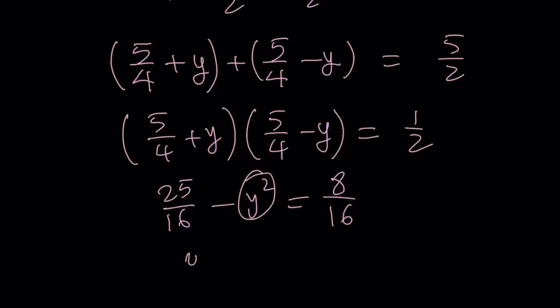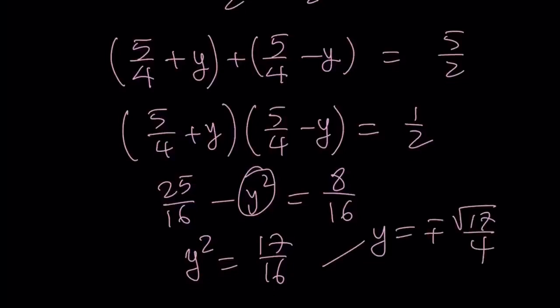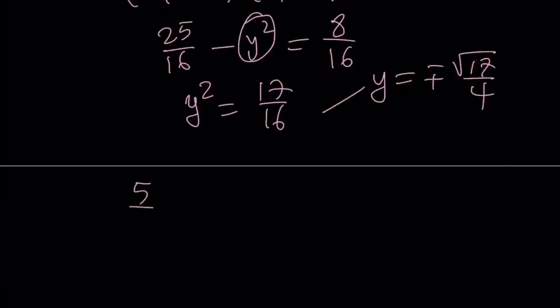Think about what y squared would be. 25 minus 8 is 17 over 16. From here, y is going to be plus minus square root of 17 over 4. Then we can easily write the solutions: 5 over 4 plus minus square root of 17 over 4. You can use the plus minus sign to summarize the solution, and that's the roots.